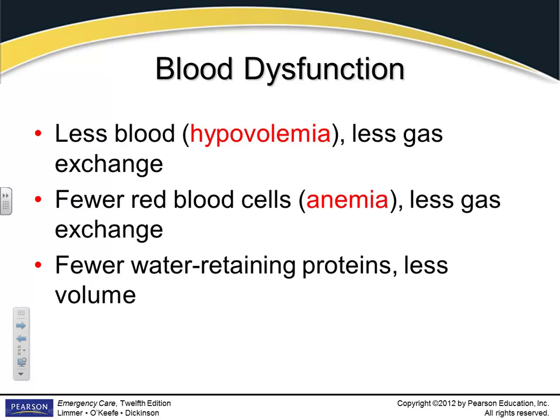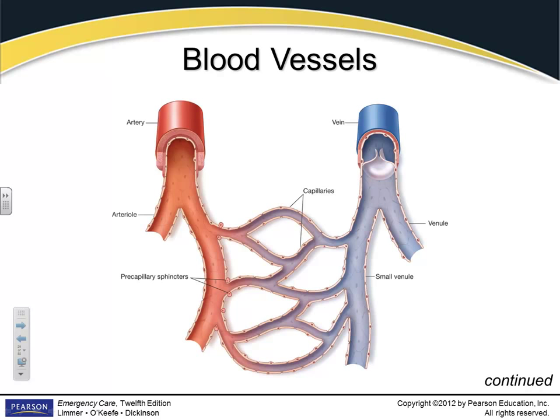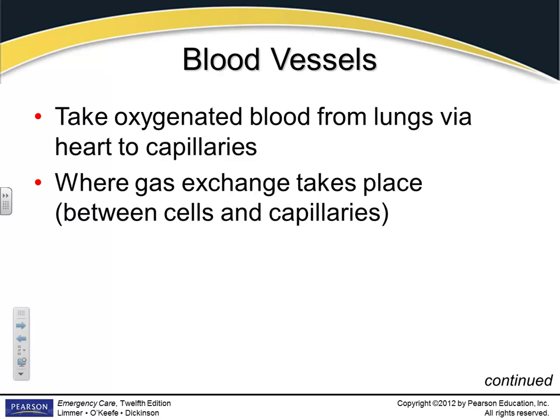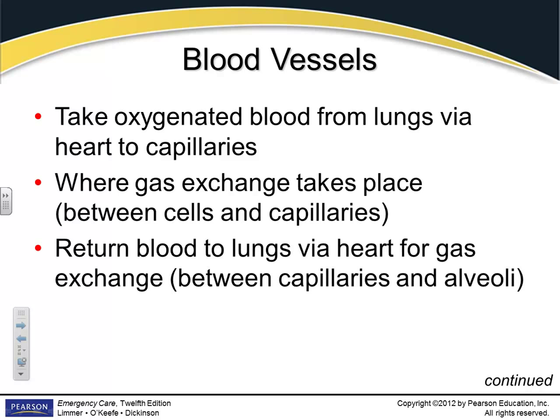One very easy way to become hypovolemic without bleeding out is dehydration — sweating and not replacing fluids leads to a low level of circulating blood volume. You're not going to be transporting enough oxygen or getting enough oxygen to your cells. Gas exchange takes place in the capillary beds. Veins return deoxygenated blood to the heart; from there it goes to the lungs to pick up oxygen, then throughout the body.